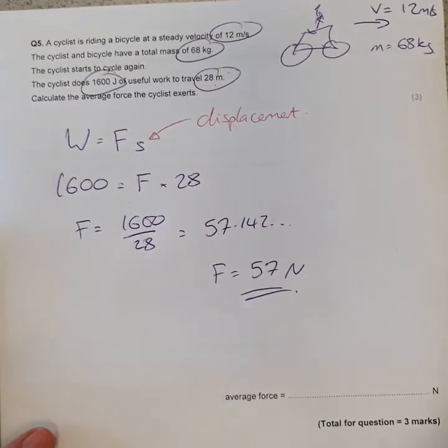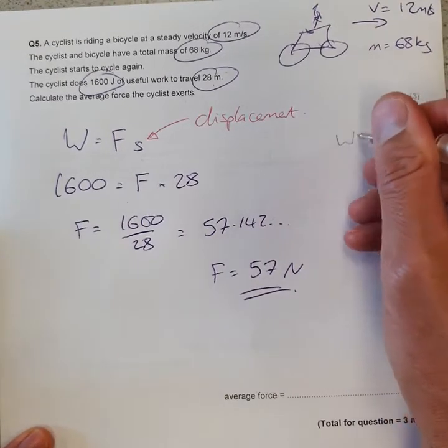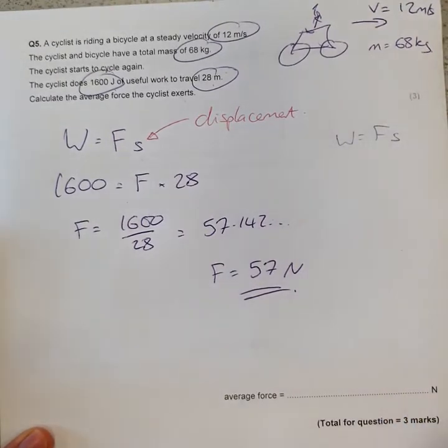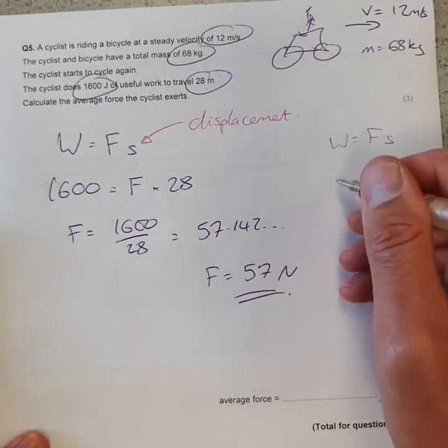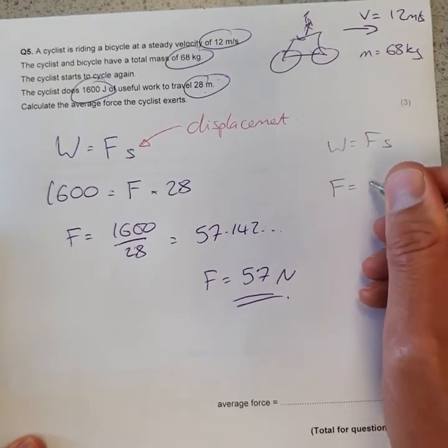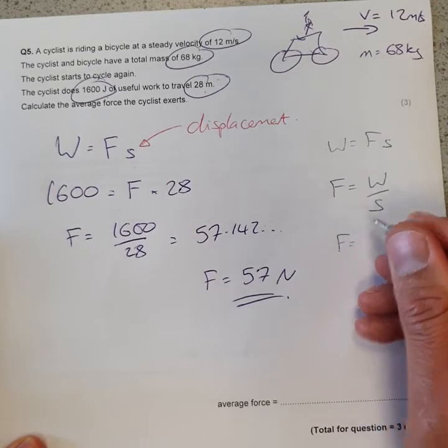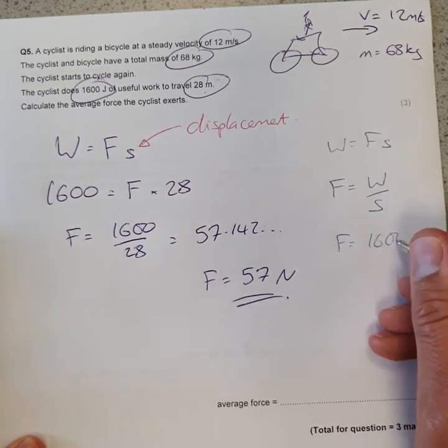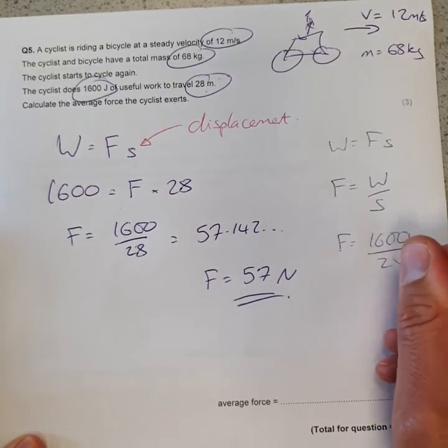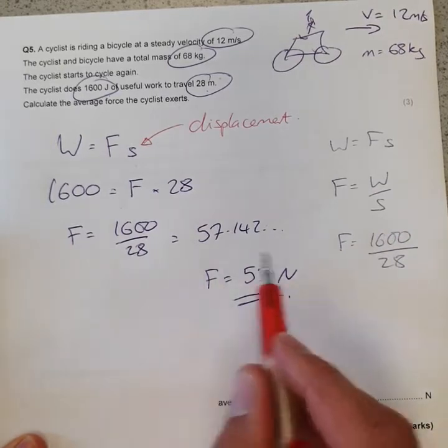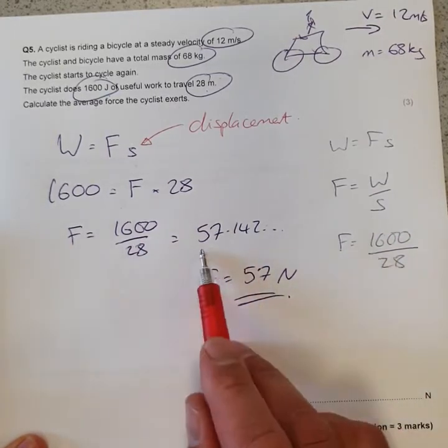You could have made a slightly different approach here. You could have gone W equals F times s. You could have rearranged it first - we're after the force, so that would be the force is the work done, 1600, all over the displacement, 28.